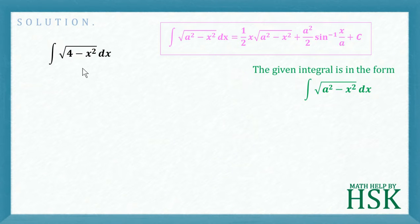Integration of square root of a squared minus x squared dx is equal to 1 by 2 x times square root of a squared minus x squared, plus a squared upon 2 into sine inverse of x upon a plus c.